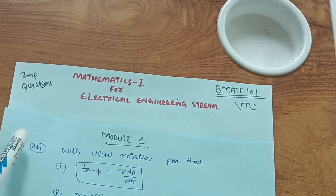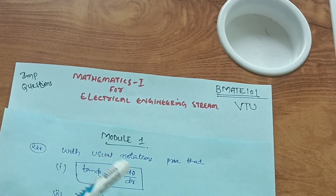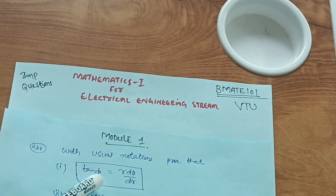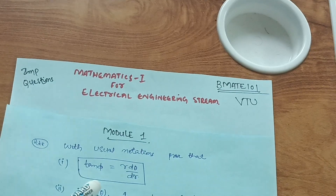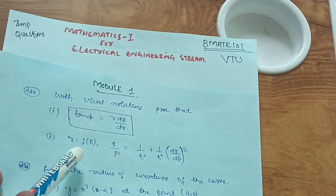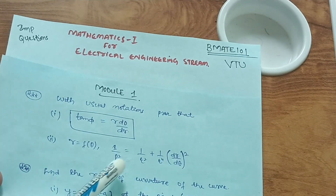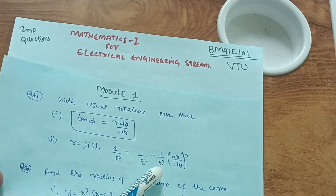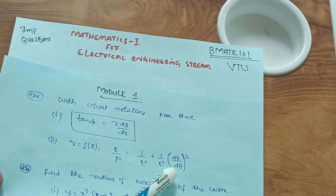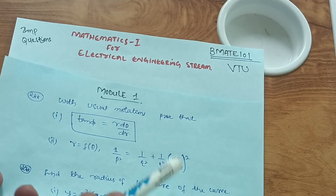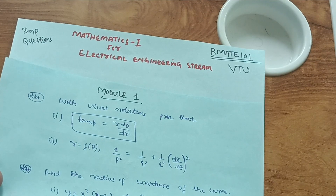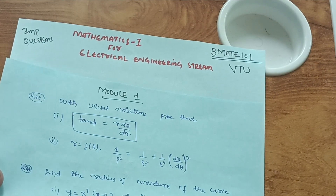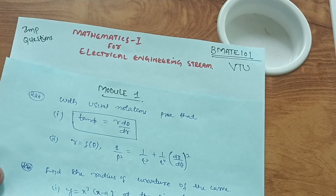With usual notations, prove that tan(φ) = r dθ/dr — this is the most important question. Next, for r = f(θ), prove that 1/p² = 1/r² + (1/r⁴)(dr/dθ)². This is again a notation, so focus on these two notations and their proofs. Just ponder on these so that you can easily secure seven marks in this particular question.